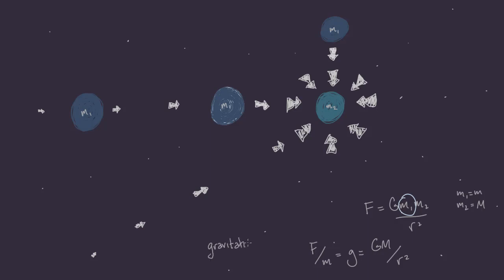As we guessed at earlier, the field generated by a mass with mass m comes directly from Newton's law of universal gravitation. The gravitational field strength is equal to the universal constant of gravitation multiplied by the mass, divided by the distance from the center of that mass squared.